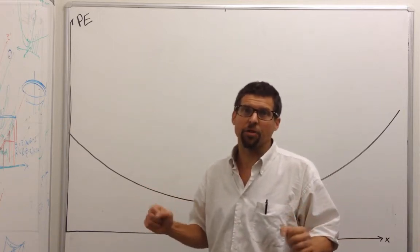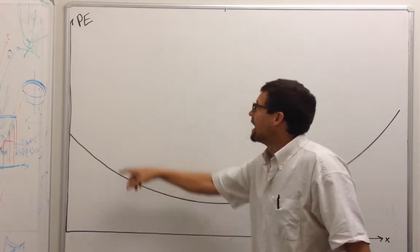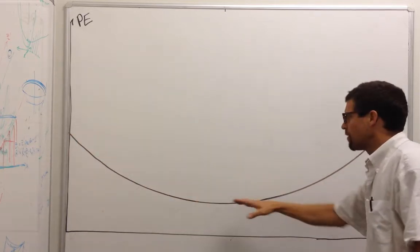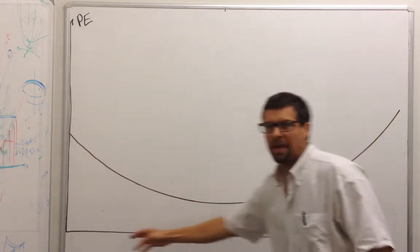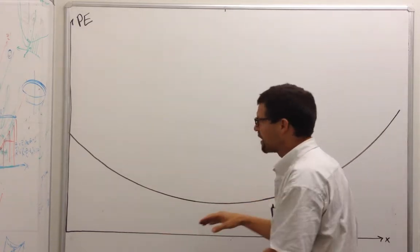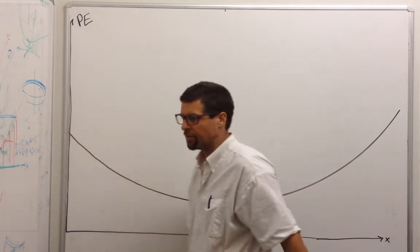Let's talk about potential energy graphs. Here I have graphed a potential as a function of position. You can see here I have more potential energy, here I have less potential energy, here I have more potential energy again.